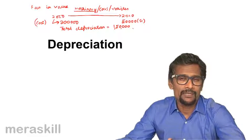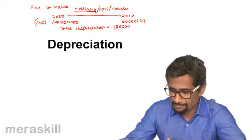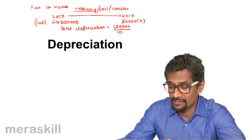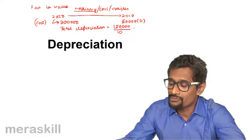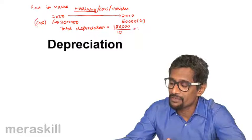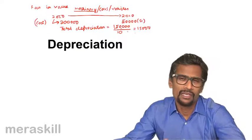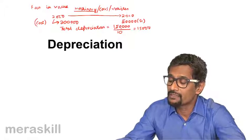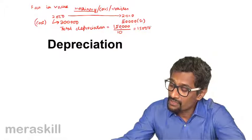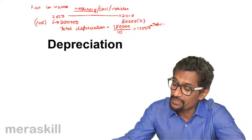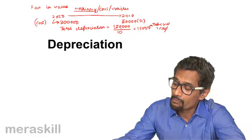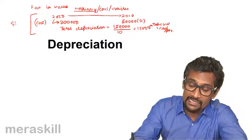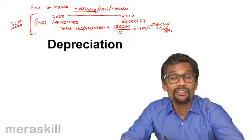50,000 is the net fall in the value or total depreciation. But this takes place on an average per year at 1 lakh 50,000 by 10. Because there are 10 years, the value has fallen by this much. So on an average in 1 year, the fall in the value has been around 15,000. It is a very simple, straightforward, linear method of calculating the depreciation. This is the rate of depreciation per annum, 15,000 per annum. So this is called the straight line method of calculating the depreciation.